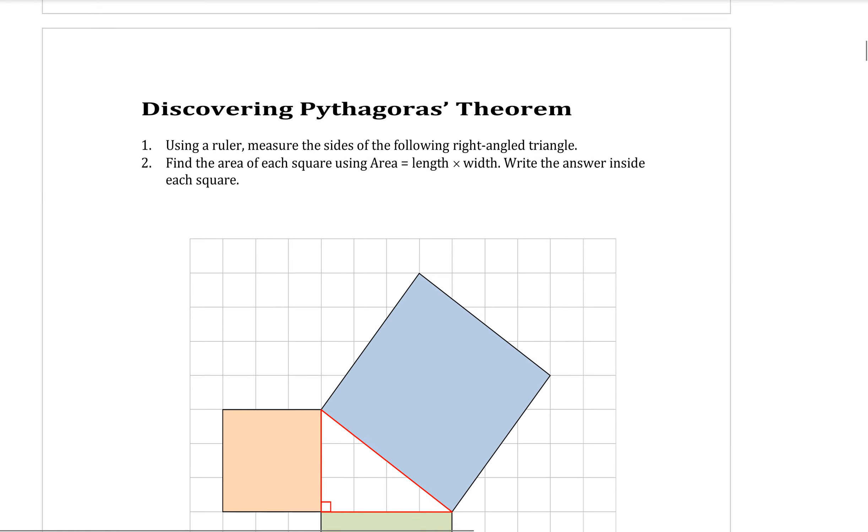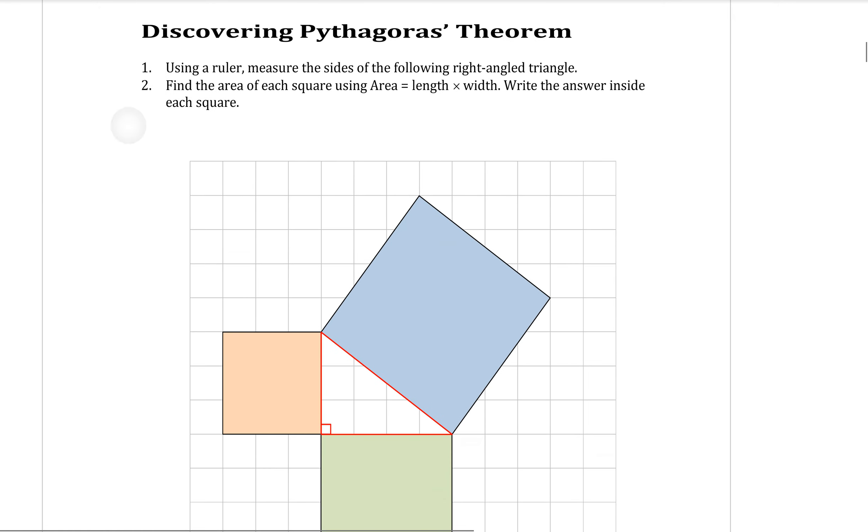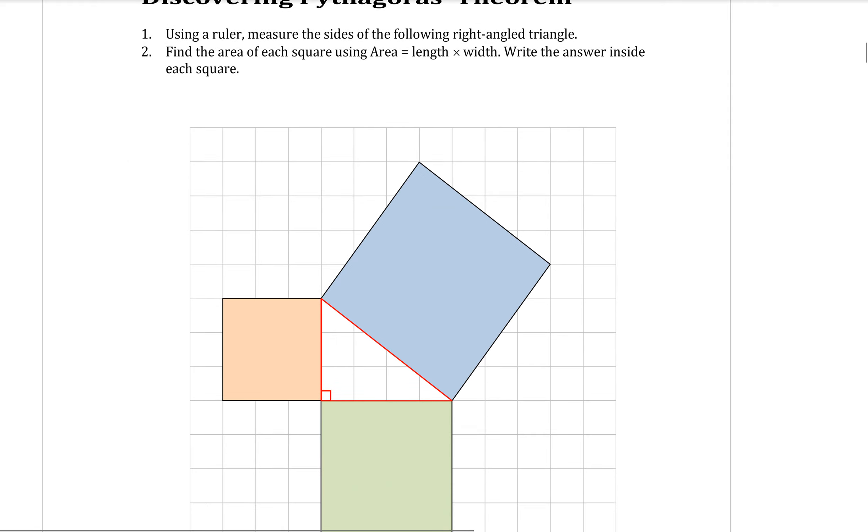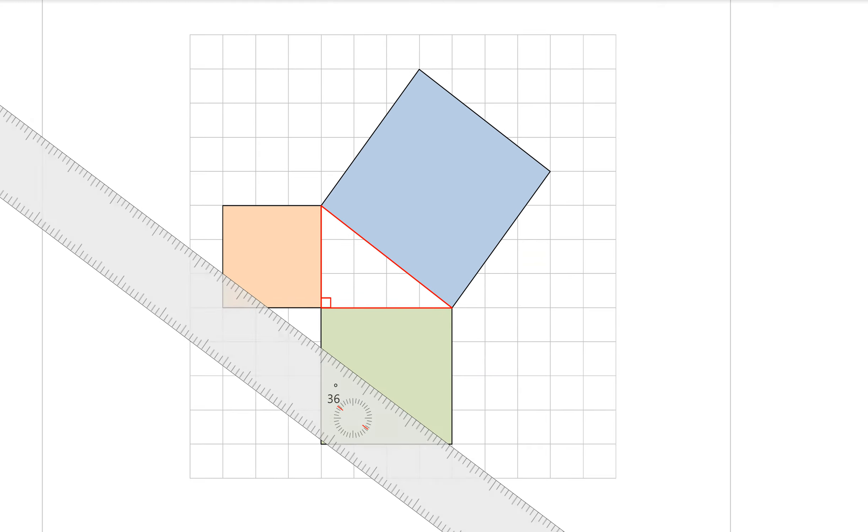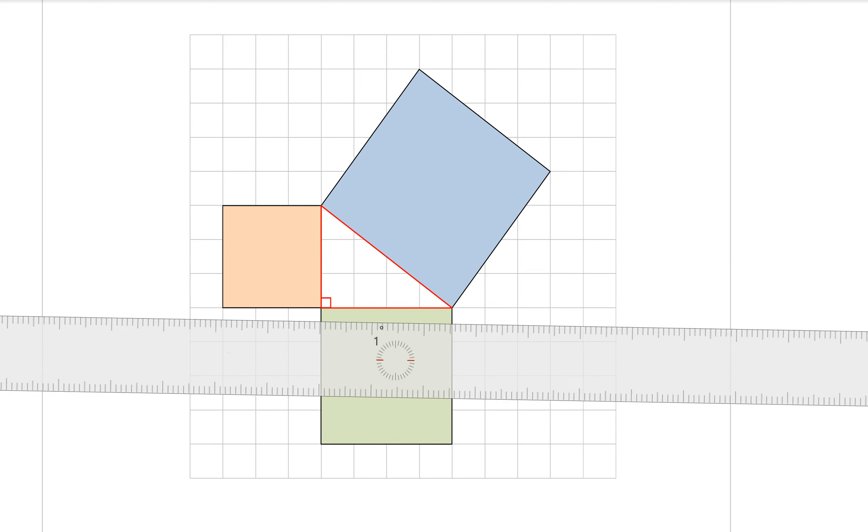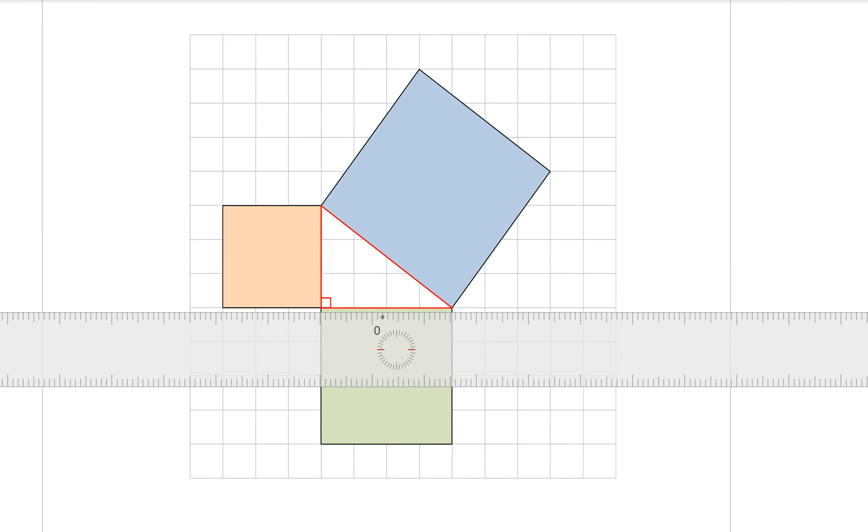Okay, so next up we're going to do a little activity on discovering Pythagoras' theorem. So using a ruler, it says here step one, use a ruler to measure the sides of the following right angle triangle. So if you have a ruler with your booklet, now my ruler doesn't have measurements on it.